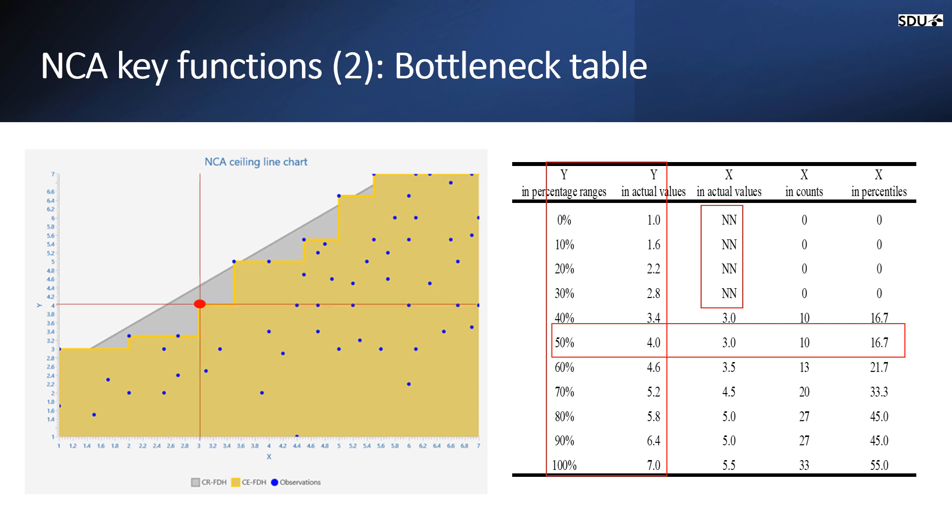Here you can see the same story in the ceiling line chart. Here the fourth column, the X in counts, focuses on the number of cases or the observations that don't meet the necessary level of X to accomplish a certain level of Y. And the fifth column, the percentile option, displays the percentage of cases that do not meet the necessary level of X to accomplish a certain level of Y.